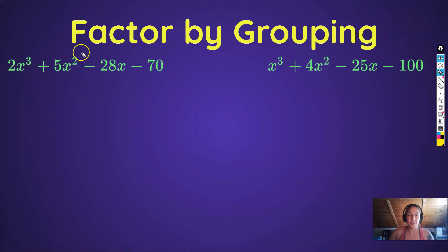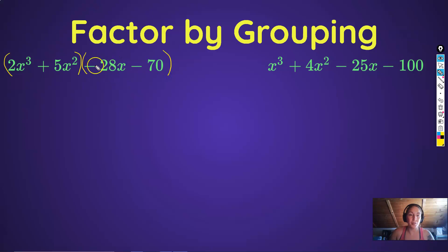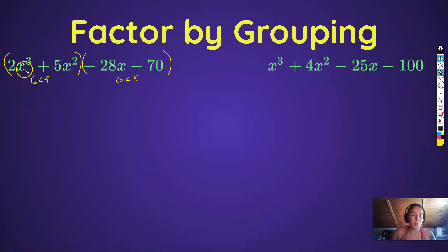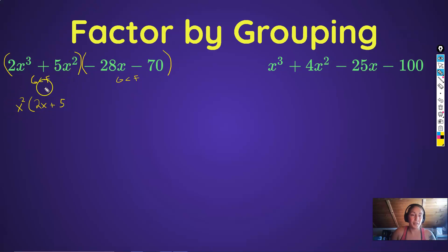Looking at the first example, we have these two terms and these two terms. The parentheses I'm putting in are just grouping symbols. After you group, you take the greatest common factor out of each group. For the first group, the GCF of the coefficients 2 and 5 is 1, but for the variables x cubed and x squared, I can take out x squared. Taking x squared out of x cubed leaves x; five divided by one stays five; and x squared divided by x squared leaves 1.